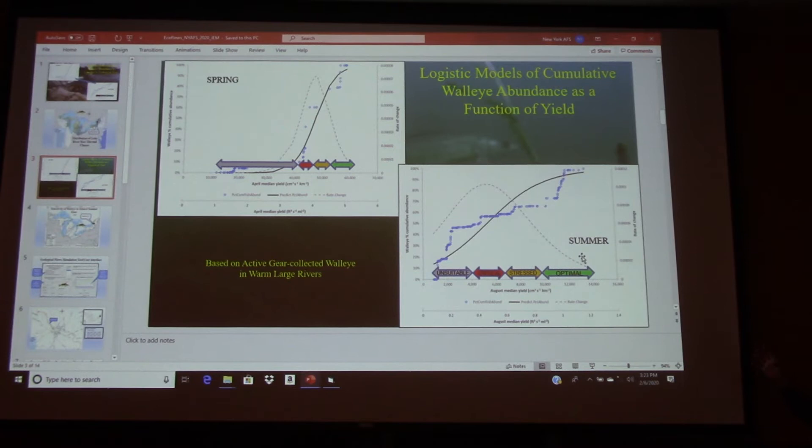And for management purposes, this has been divided up into sections of flow that support an optimal number of fish. Stressed areas in the yellow where we're starting to drop off. We're starting to lose some of our fish as the population, or as the yield goes down and fewer are supported.